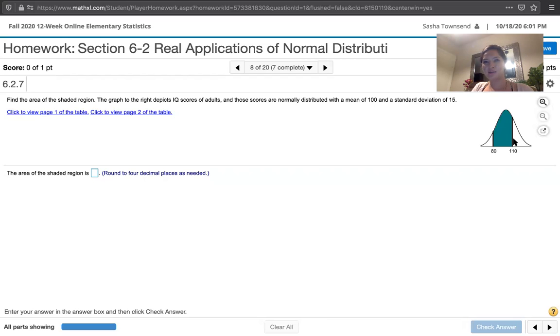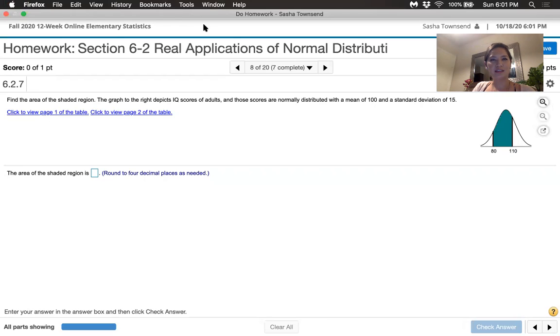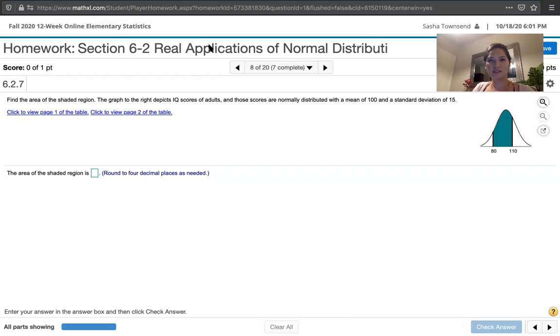So it looks like we want the probability that an IQ score is between 80 and 110. In order to work this out, I'll share my paper with you and then we'll use the table A2 that I have on my computer here.